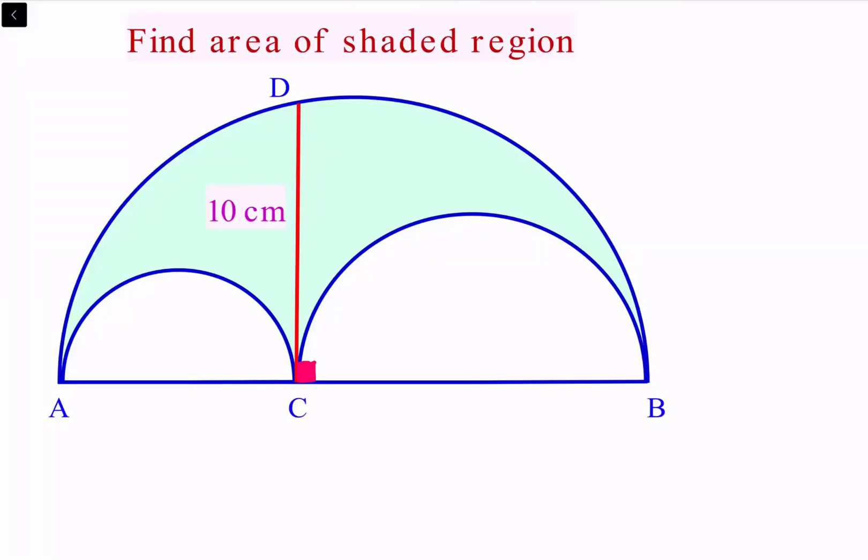In this question, three semicircles are given as shown. We have CD perpendicular to AB with length 10 centimeters. Using this data, we have to find the area of the shaded region.